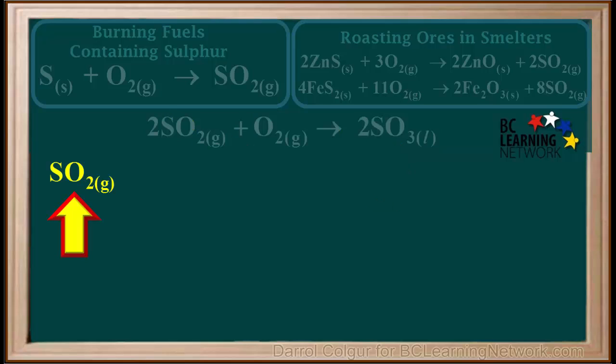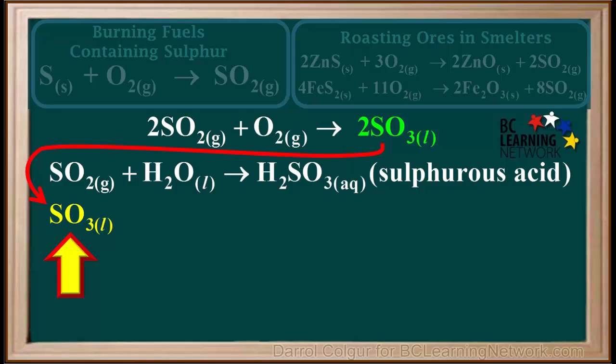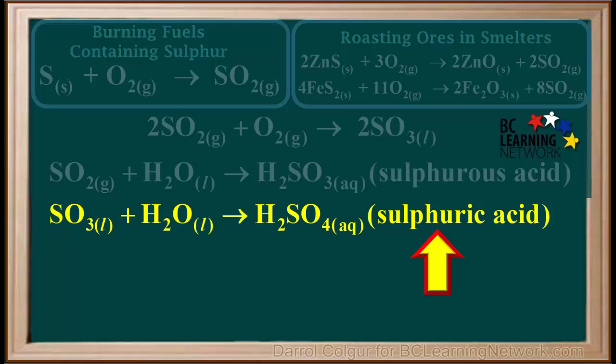SO2, being a non-metal oxide, will react with water droplets in the air to produce H2SO3, or sulfurous acid. Sulfurous acid is classified as a weak acid. SO3 present in the mixture is also a non-metal oxide, so it will react with water, producing H2SO4, or sulfuric acid. Sulfuric acid is classified as a strong acid.